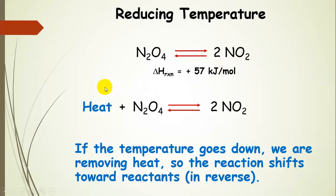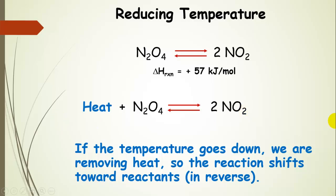Let's set it up. Now delta H is positive, so heat is a reactant. Writing out our reaction the same way as before, if we decrease the temperature, we're removing heat — which means we're removing reactant. So the reaction is going to shift toward reactants. We removed reactant, so the system tries to replace it by shifting toward reactants.